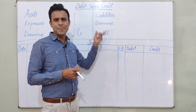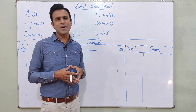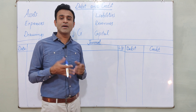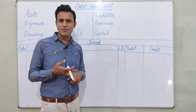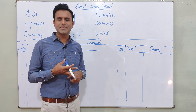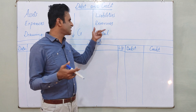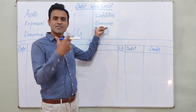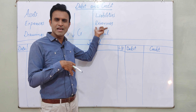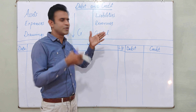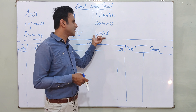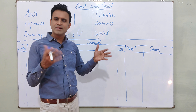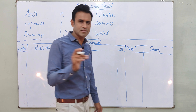Then we have revenues. Revenues are things like sales, commission — these are all your revenues. Discount received or interest earned can also be added here. Then capital is coming. Anything invested in the business is known as capital. This is what we have discussed in lecture number 3.